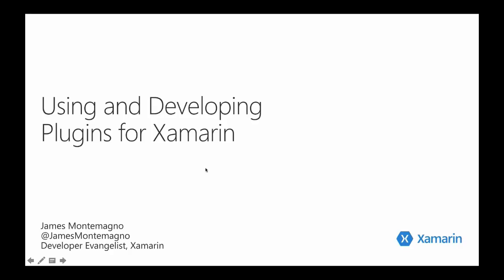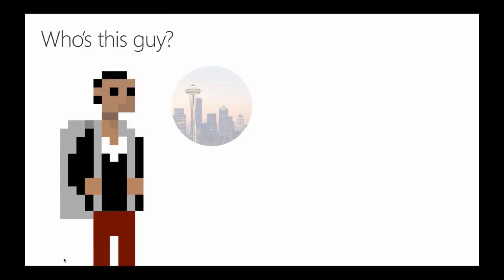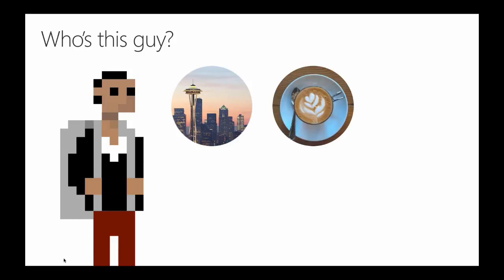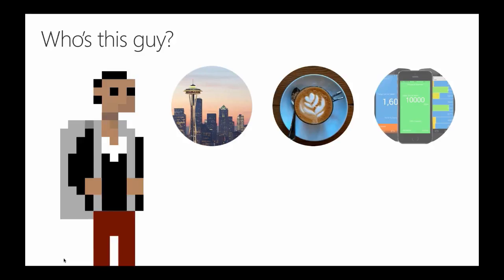If you don't know who I am, I'm James Montemagno. I'm a developer evangelist here at Xamarin. I live in the beautiful, wonderful, sunshiny state of Washington in the beautiful city of Seattle, right near the Space Needle. I moved here four years ago, not just to become a mobile developer, but actually for the coffee. All I do is drink coffee — I have coffee apps, coffee blogs, coffee everything. I'm already on my third cup this morning. I moved to Seattle from Phoenix, and originally from Cleveland, to build and create mobile applications. It's my passion.